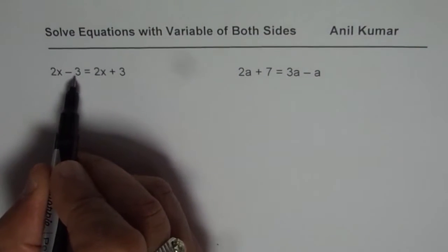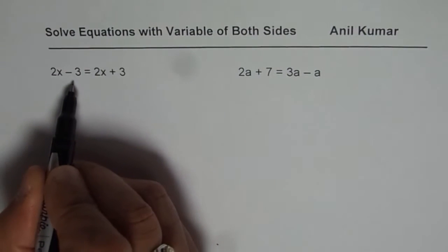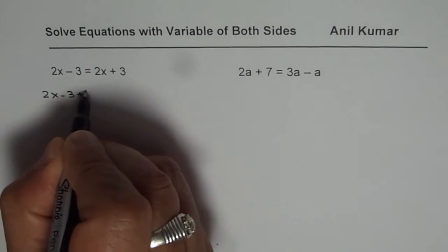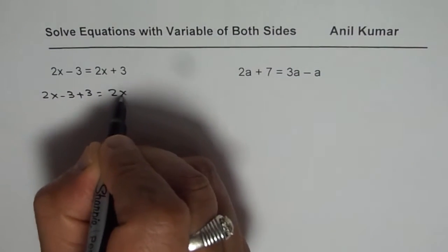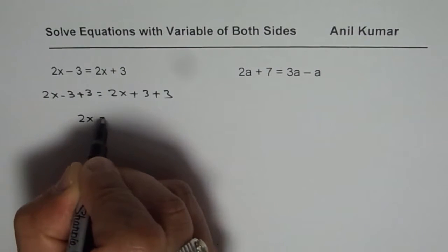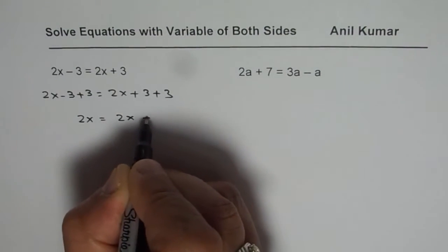So it is 2x minus 3 equals to 2x plus 3. Let us take the numbers on the right side. So we will add 3 on both the sides. So we have 2x minus 3 plus 3 equals to 2x plus 3 plus 3. That gives us 2x equals to 2x plus 6.